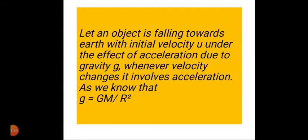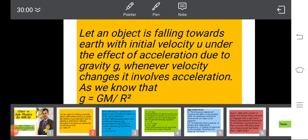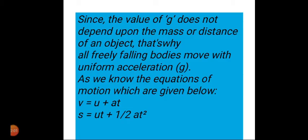As all freely falling bodies move with uniform acceleration, the equations of motion for uniformly accelerated bodies having motion in a straight line can be written. The three equations of motion are: v = u + at, s = ut + ½at², and v² - u² = 2as.